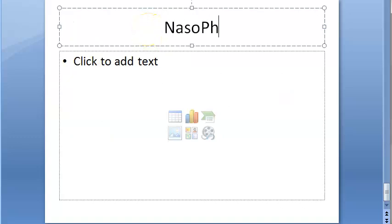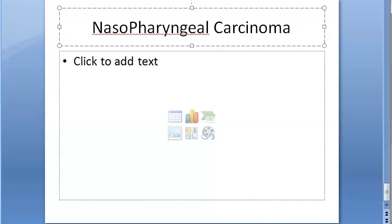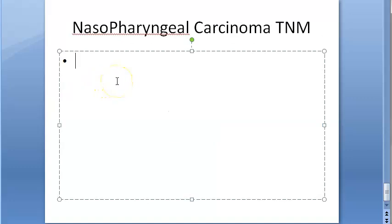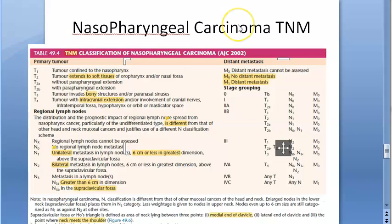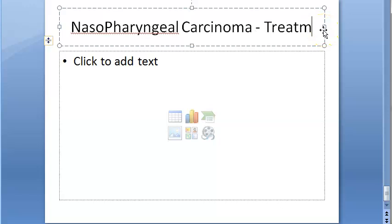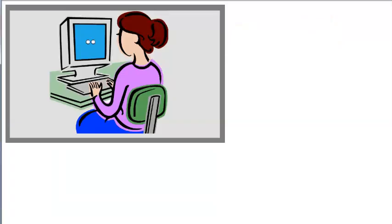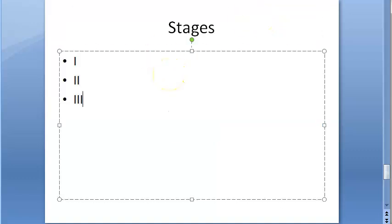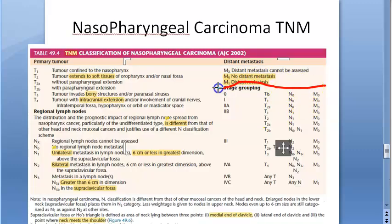There is a classification and staging for nasopharyngeal carcinoma. TNM staging is used, and based on that they do stage grouping into stages 1, 2, 3, and 4. For stages 1 and 2, radiotherapy can be given. For stages 3 and 4, chemotherapy combined with radiotherapy is given.